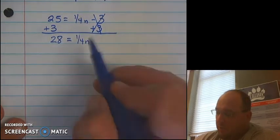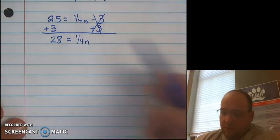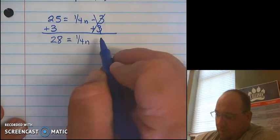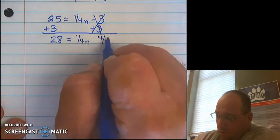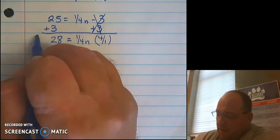We learned in the previous videos we have multiplication of a fraction here. In order to remove this 1 fourth with the n, I can simply multiply by the reciprocal of 1 fourth. And the reciprocal of 1 fourth is simply 4 over 1, also known as 4. I do that to the other side also. I'm just going to multiply by 4.